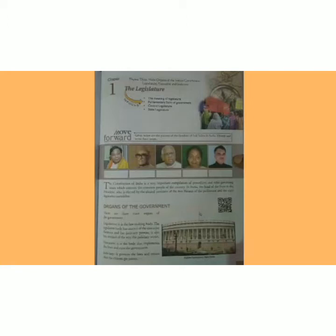Organs of the government — sarkar ke ang. There are three main organs of the government: Legislature, which is the law-making body. The legislative assembly has control of the executive, finances, and has judiciary powers. It also has control of the way the judiciary works. Legislature is the law-making body and controls the executive, finance, and judiciary power.